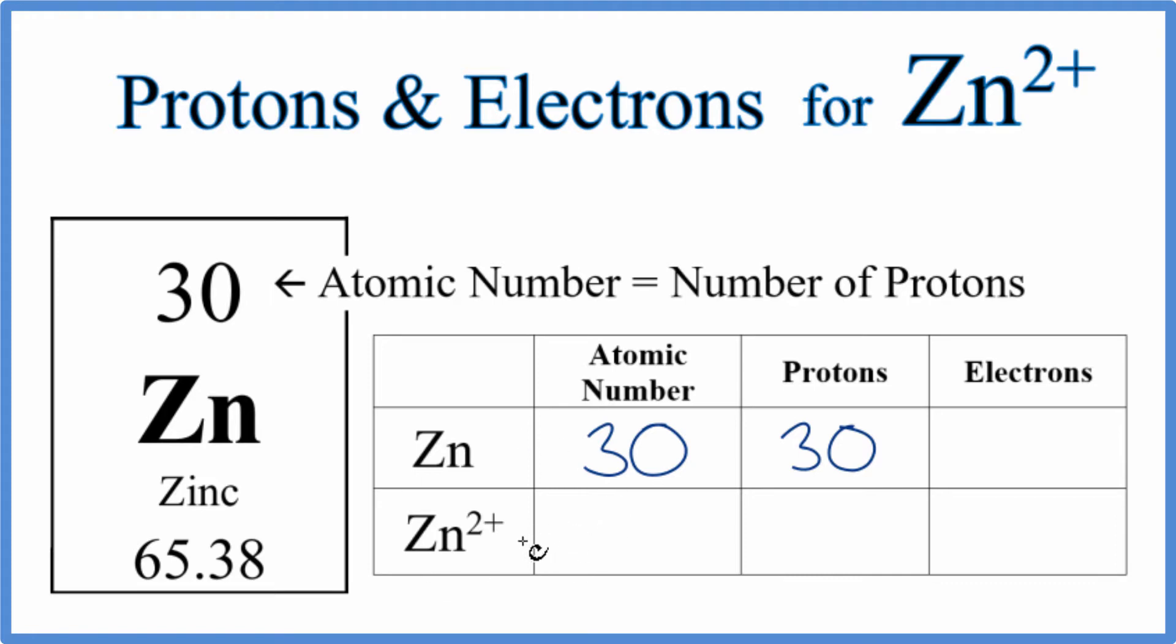When we have an ion, the only thing that's different between this ion and the neutral element of zinc is the number of electrons. The atomic number for zinc, whether it's neutral or an ion, is going to be 30. So the protons have to be 30 as well.